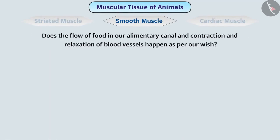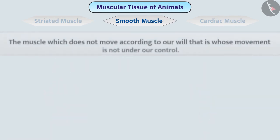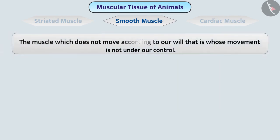Does the flow of food in our alimentary canal and contraction and relaxation of blood vessels happen as per our wish? Definitely your answer will be no. The movement of muscles present in the alimentary canal and blood vessels is not under our control. The muscle whose movement is not under our control is called involuntary muscle.